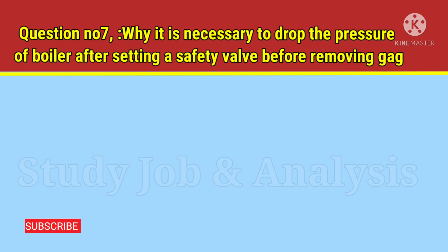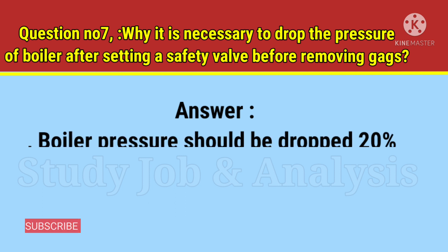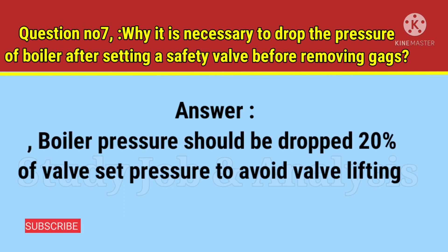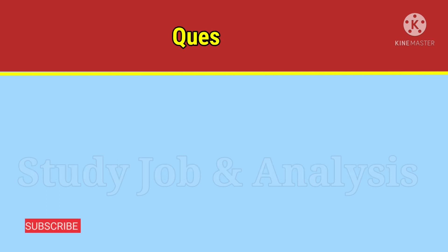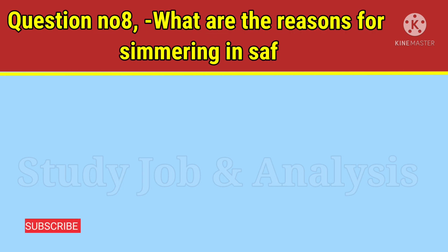Question number seven: why is it necessary to drop the pressure of the boiler after setting a safety valve, before removing gags? Answer: Boiler pressure should be dropped by 20 percent of the valve set pressure to avoid the valve lifting prematurely.